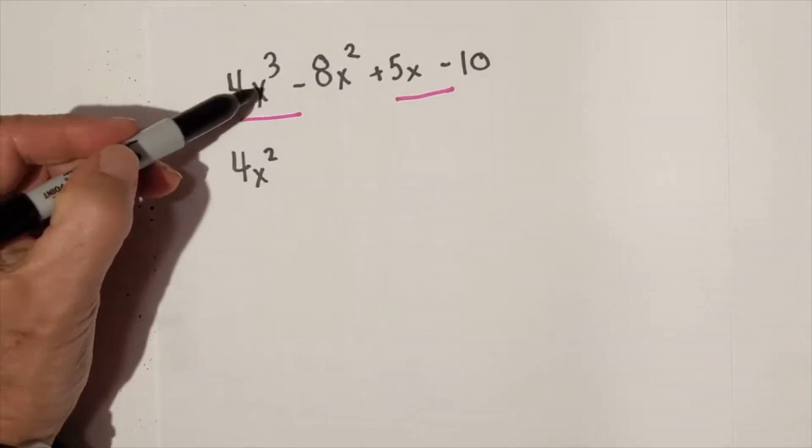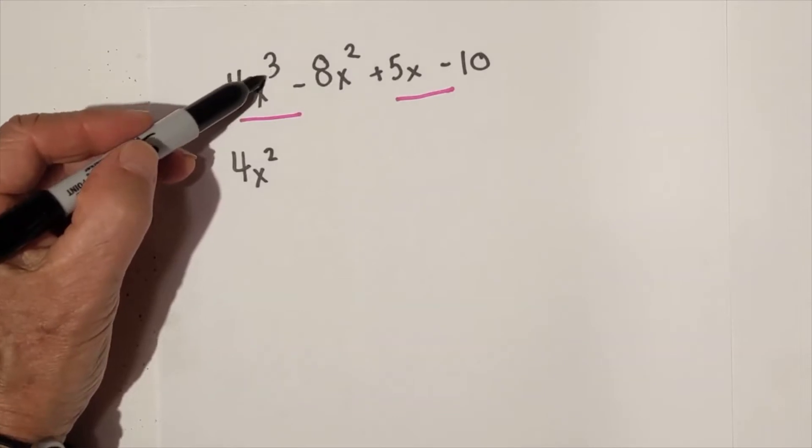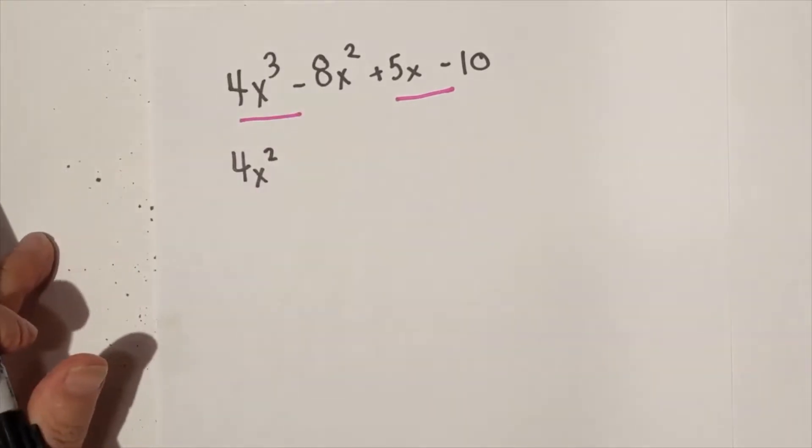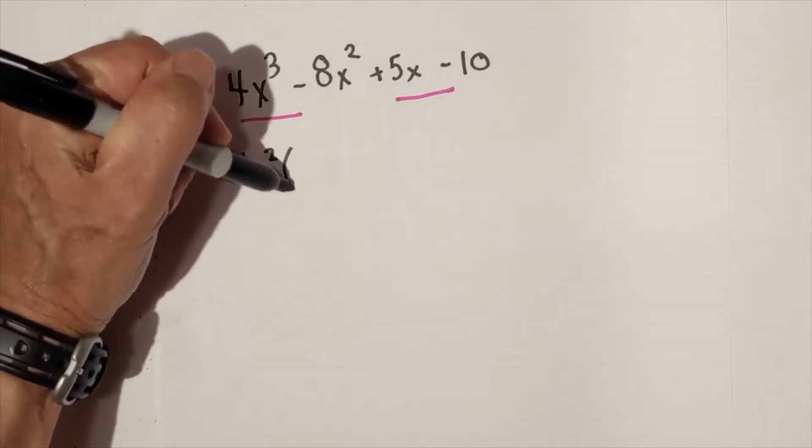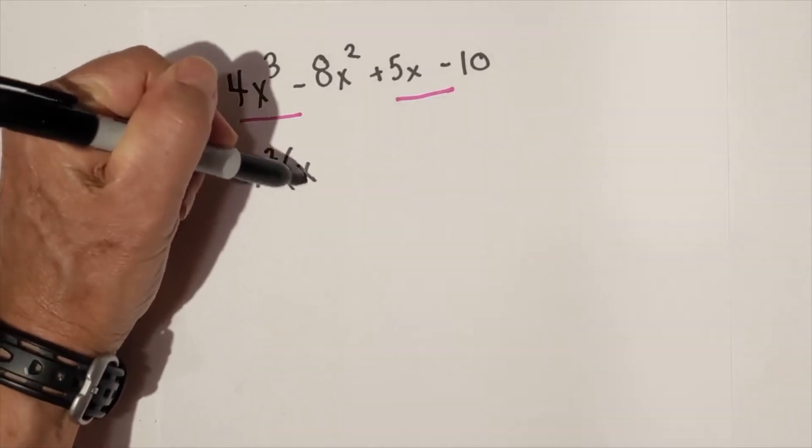So what we are left with is x minus 2, because the 4x squared goes into 4x cubed x times, and goes into negative 8x squared negative 2 times.